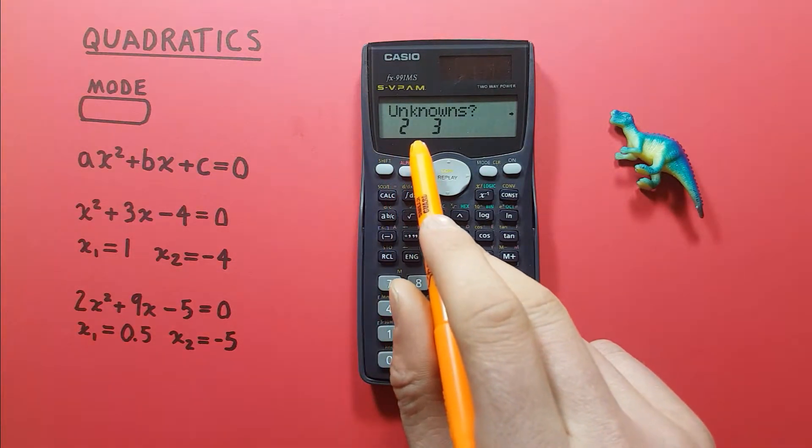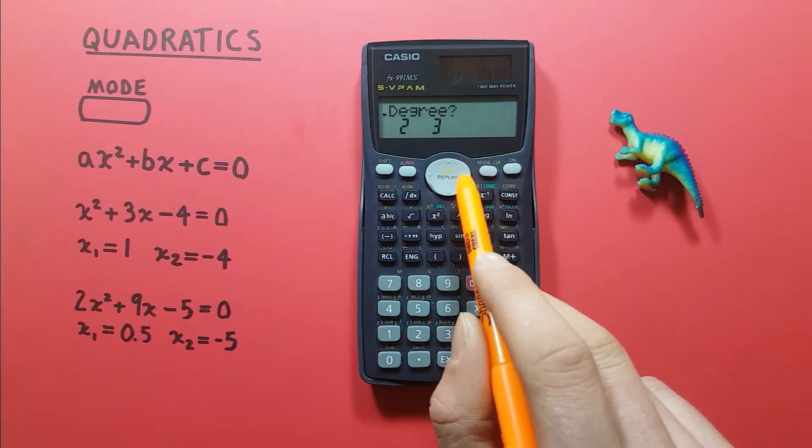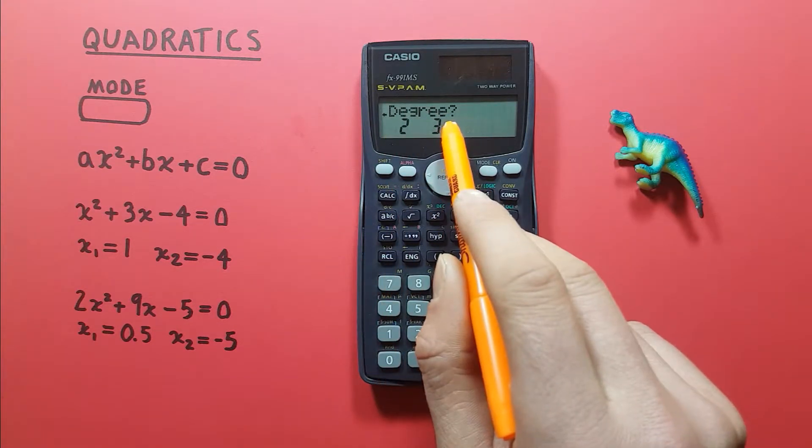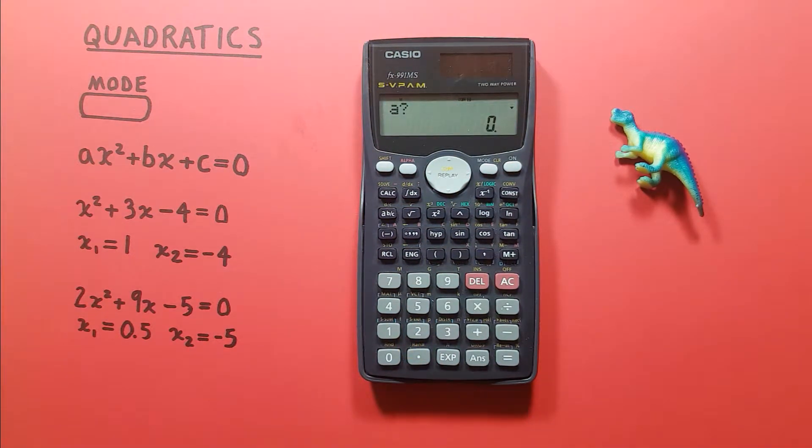Then it asks us for unknowns. We don't want these. What we want to do is go to the right once and get to degrees. Choose two degrees and then it'll bring up this screen where it asks us what our A will be.